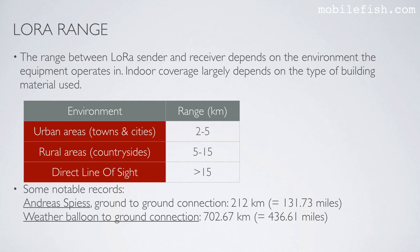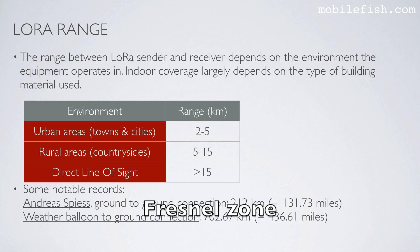Here are some notable records. Andreas Spiess, a fellow YouTuber known as the man with the Swiss accent, conducted an experiment and achieved a LoRa ground-to-ground connection over a distance of 212 km. Another team created a record whereby a LoRa sender was connected to a weather balloon; several LoRa receivers on the ground detected the signal, with one receiver at a distance of 702 km able to detect it. These records can only be achieved if there is direct line of sight and no obstacles within the Fresnel zone, which will be explained later in this video series.